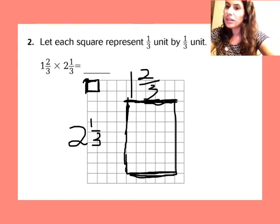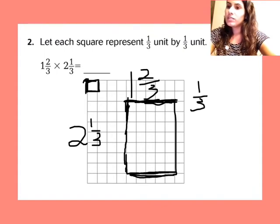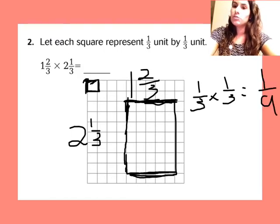But I have to find the area of each little box first, because each little box is one-third long and one-third in height. So I'm going to do one-third times one-third, and that's going to give me one-ninth, which is the area of each little individual box.